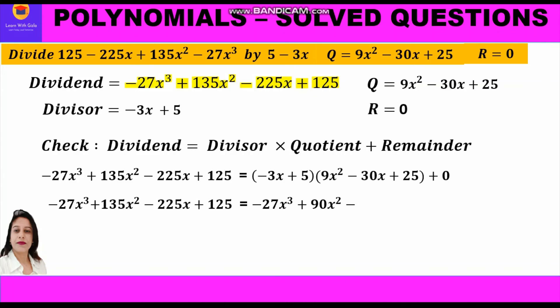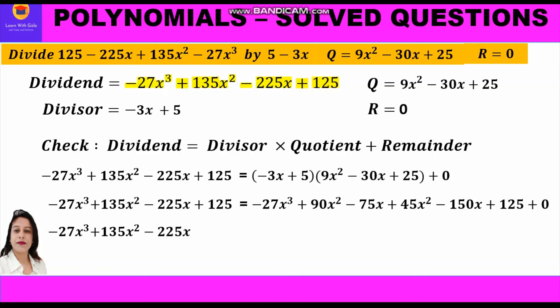We multiply the binomial by the trinomial: take the first term of the binomial and multiply by all terms of the trinomial, then the second term. So −3x × 9x² = −27x³, −3x × (−30x) = 90x², −3x × 25 = −75x. Then 5 × 9x² = 45x², 5 × (−30x) = −150x, and 5 × 25 = 125, plus 0.